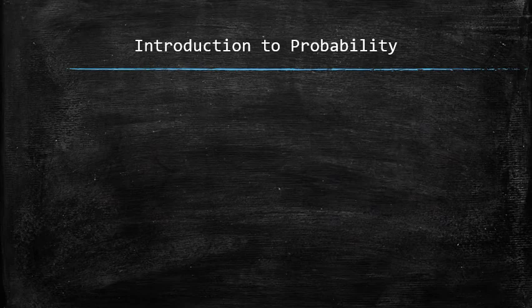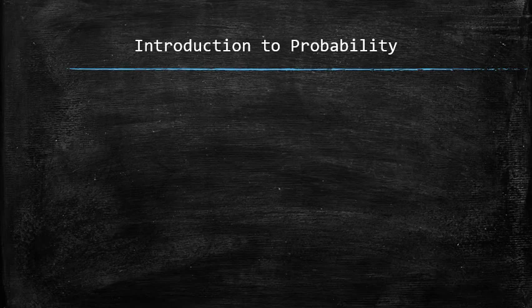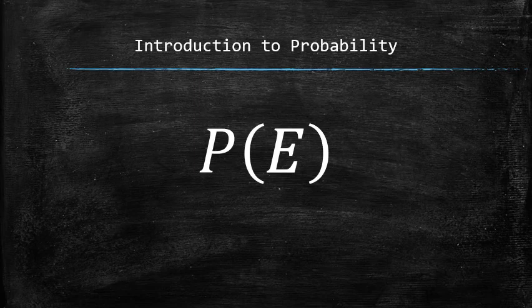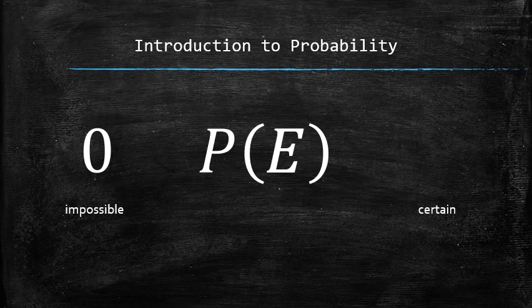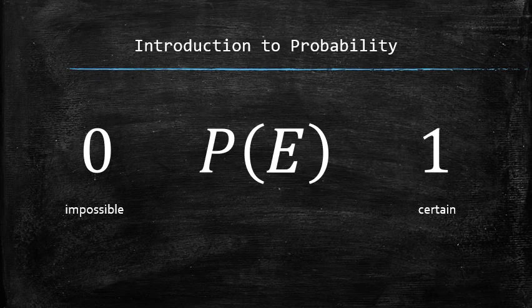Now, once we have the precise and informal definitions of an event, we can define the probability of an event. Recall that the probability is a measure of how likely an event to occur. We denote the probability of an event E as P of E, and we define the probability of an impossible event to be equal to 0, and the probability of a certain event to be equal to 1. Nothing can be more likely than a certain event, and nothing can be less likely than an impossible event. Therefore, the following inequality must be true for any event E.